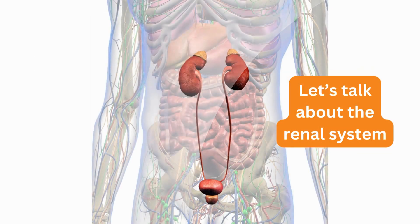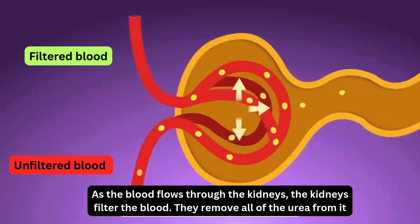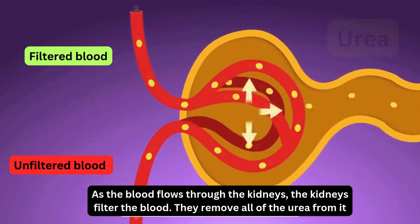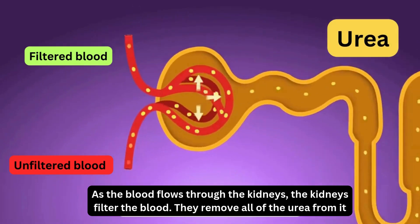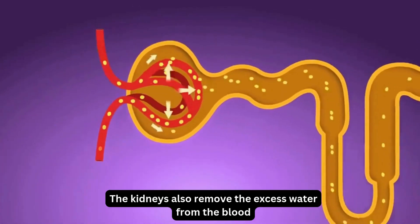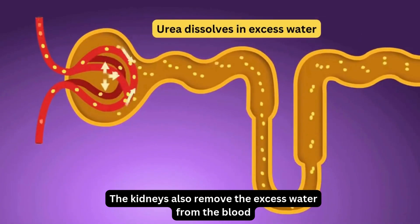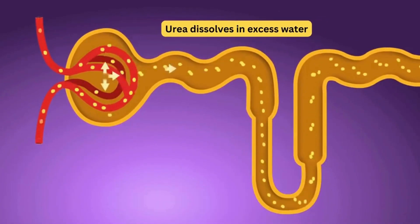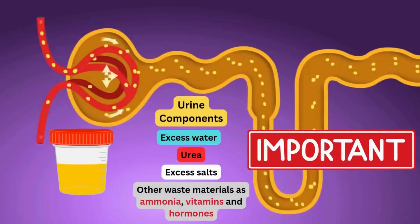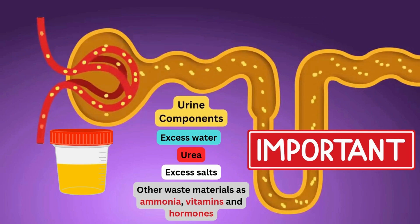Let's talk about the renal system. As the blood flows through the kidneys, the kidneys filter the blood. They remove all of the urea from it. The kidneys also remove excess water from the blood. The urea dissolves in the excess water, and the solution made of urea dissolved in water is called urine.